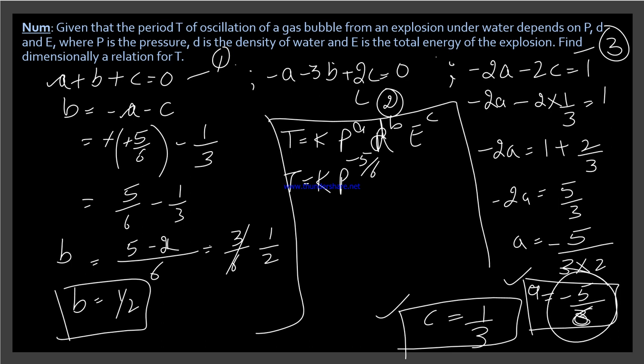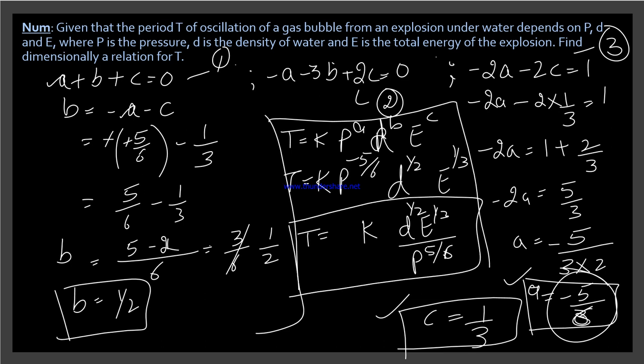So T's answer is K P to the minus 5 over 6, d's value b which is 1 over 2, E's value 1 over 3. The minus term, take it to the bottom. So we get d E^(1/3) * d^(1/2) divided by P to the power 5 over 6. So this is our final answer. Is it clear? Thank you.